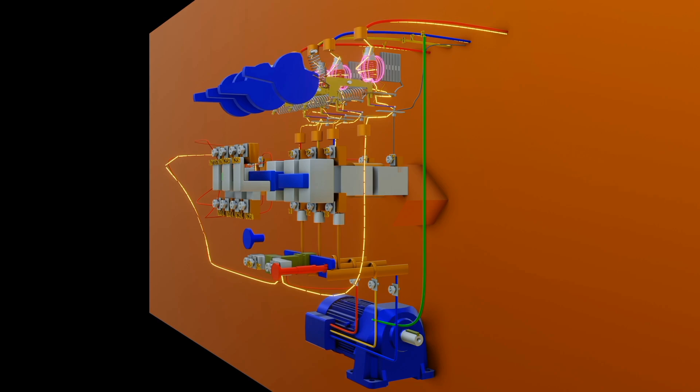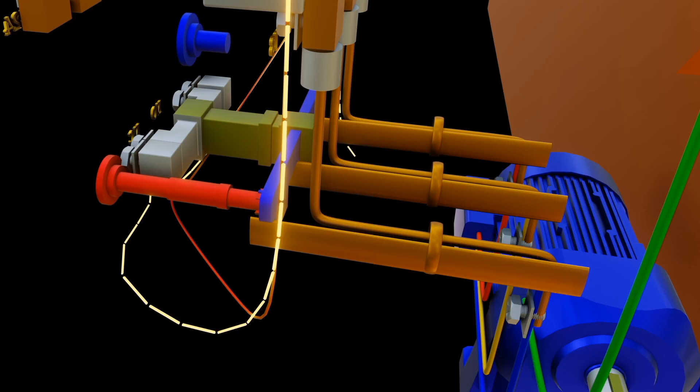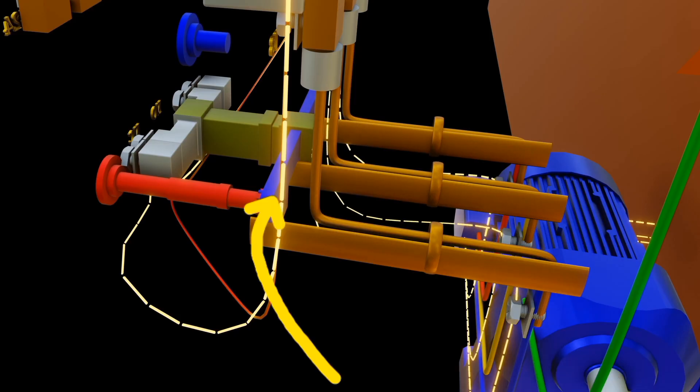So when we have overcurrent, the bimetallic strip will bend, moving the link contact, which opens the normally closed contact in the thermal overload relay.